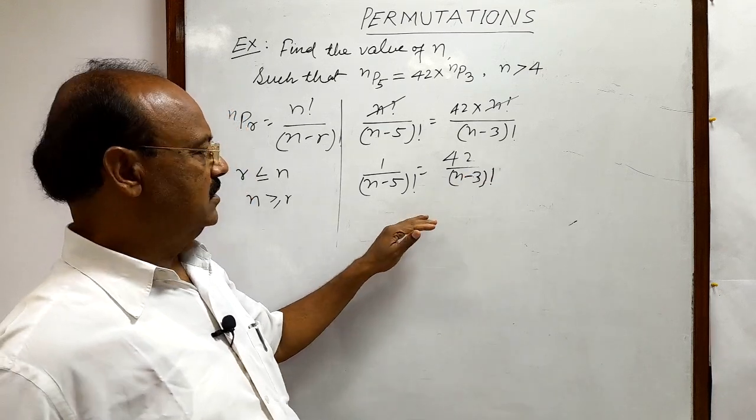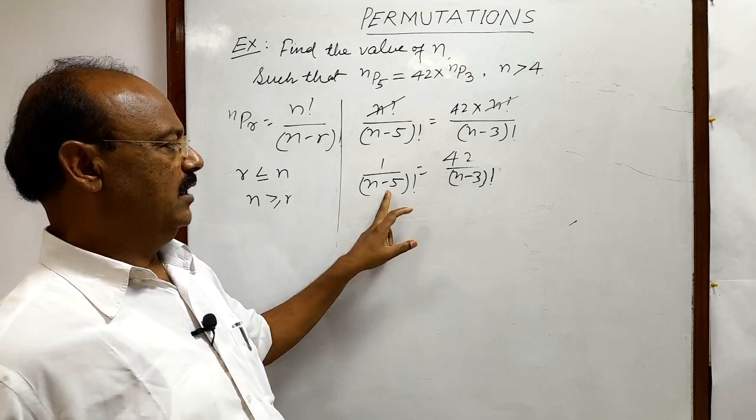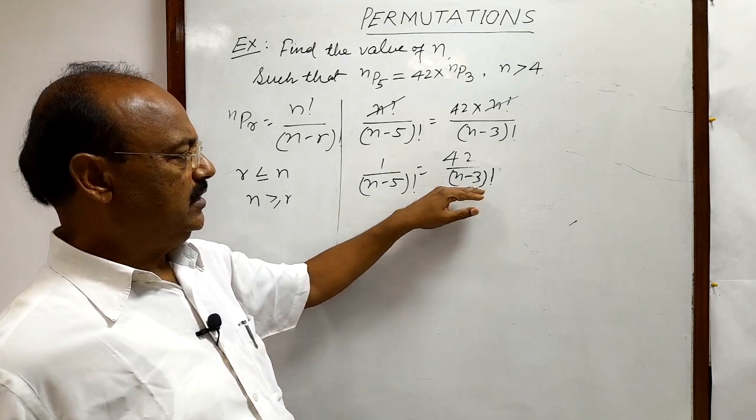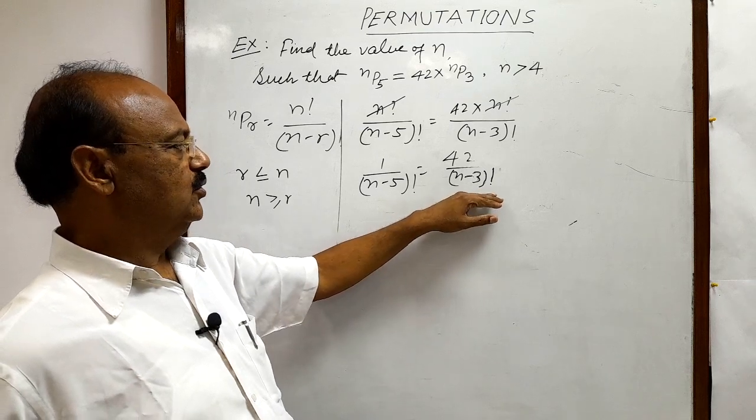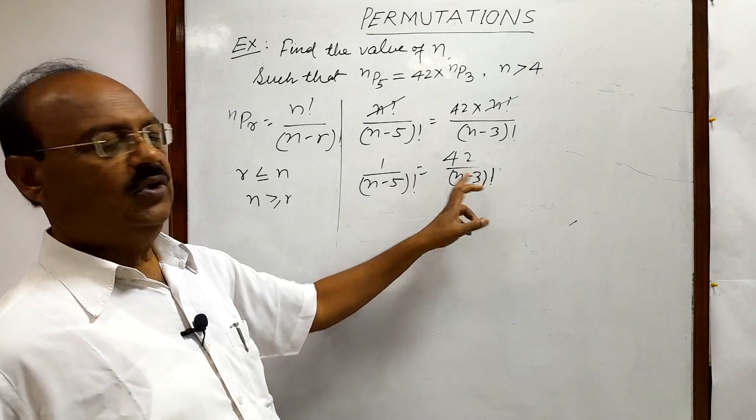Here this is obvious that N minus 3 is greater than N minus 5. So, it should be expanded further so that N minus 5 factorial will be cancelled out from both the sides.